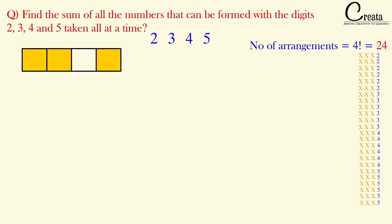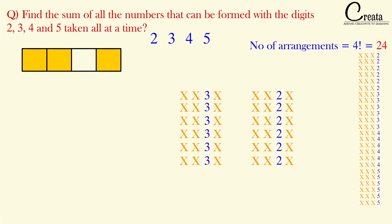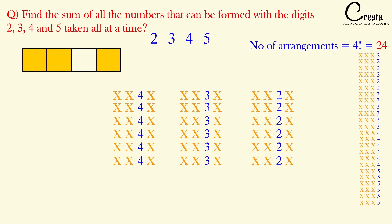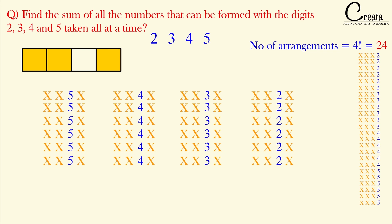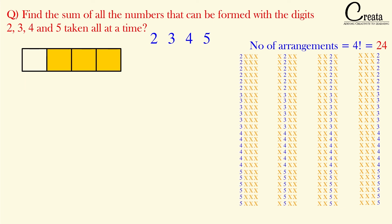Similarly, for the tens place, there are 6 numbers with digit 2 at the tens place, 6 with digit 3, 6 with digit 4, and 6 with digit 5. The same logic applies to the hundreds place and the thousands place. So our approach is to find the sum of digits at the units, tens, hundreds, and thousands places individually and then add them all together.